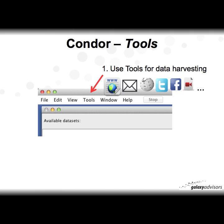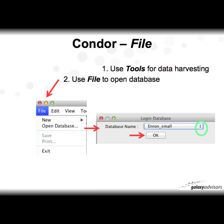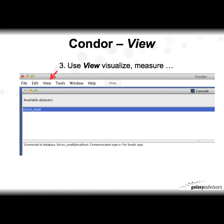In sum, the Tools are used for data harvesting from the web, email, Wikipedia, Twitter, Facebook, video, and more. The second step is File → Open Database. If you click on File, you get a drop-down menu. Click Open Database and a small window opens — shown circled in green — listing the multiple databases available. Select one, click OK. In this particular example, I've opened a small Enron email dataset to illustrate the viewing options.